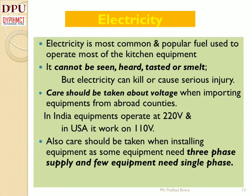Electricity is the most commonly used fuel in all kitchens. It is popular due to its easy operation and controlled temperature as per requirement. Electricity cannot be seen, heard, tasted or smelled, but it can cause serious injury if proper care is not taken. Care should be taken while ordering electrical equipment, as many countries operate on certain voltages. In India, electrical equipment operates at 220 volts, and in the USA it works at 110 volts. Many heavy electrical equipment like ovens, deep freezers, bain-marie, and refrigerators require three-phase supply, while fewer equipments require a single-phase supply.